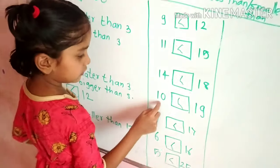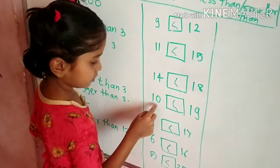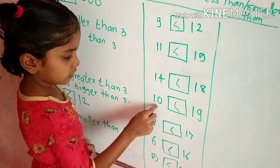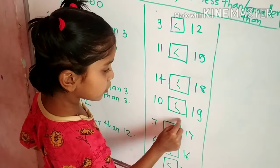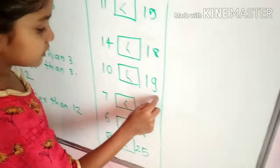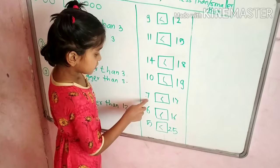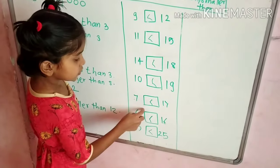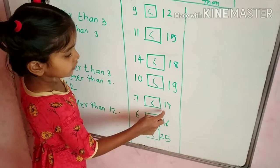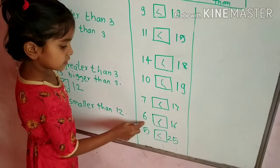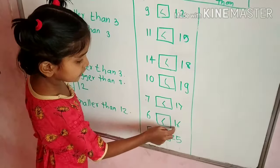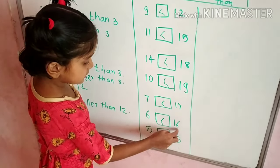10 is smaller than 19. 7 is smaller than 17. 6 is smaller than 16.